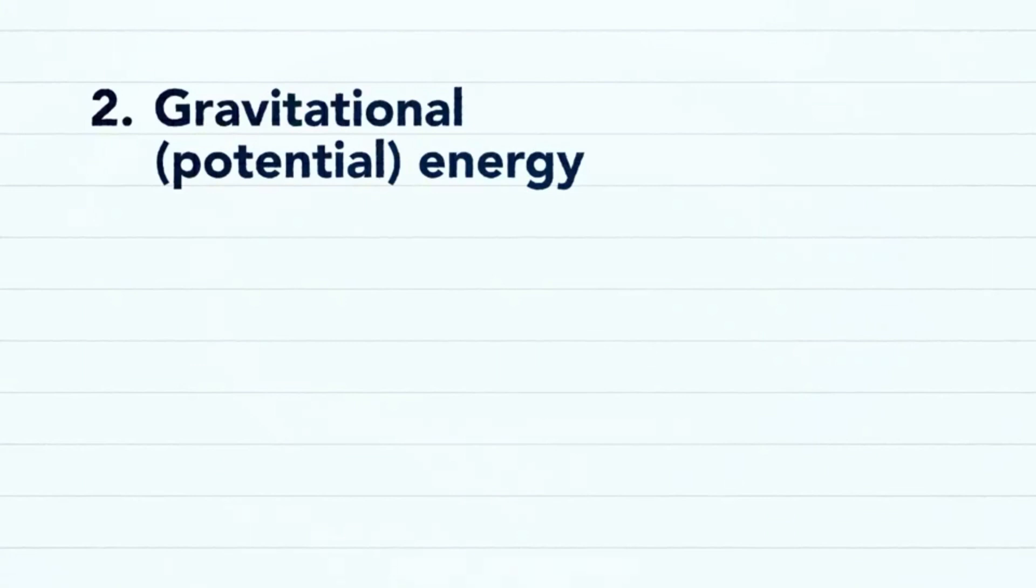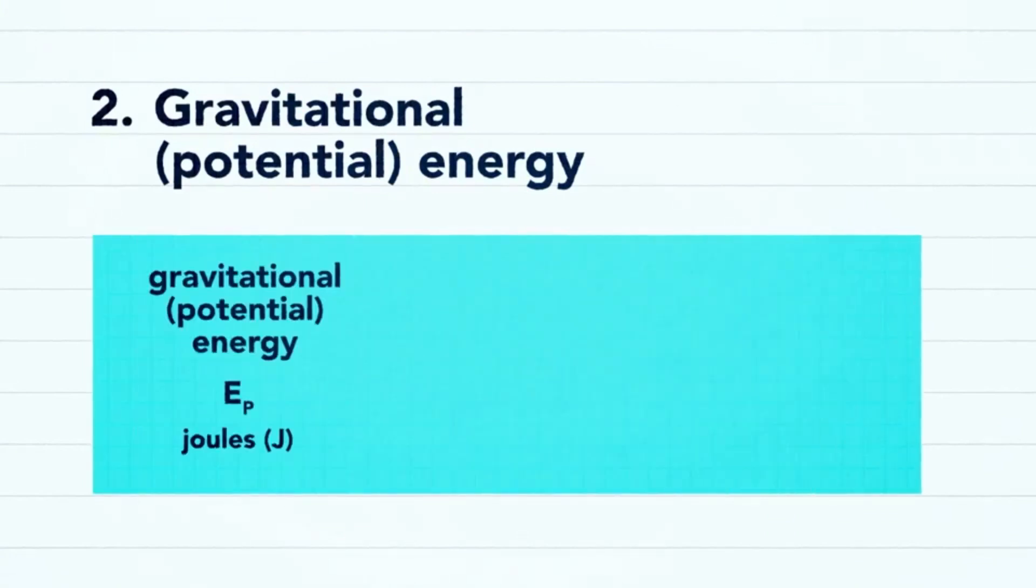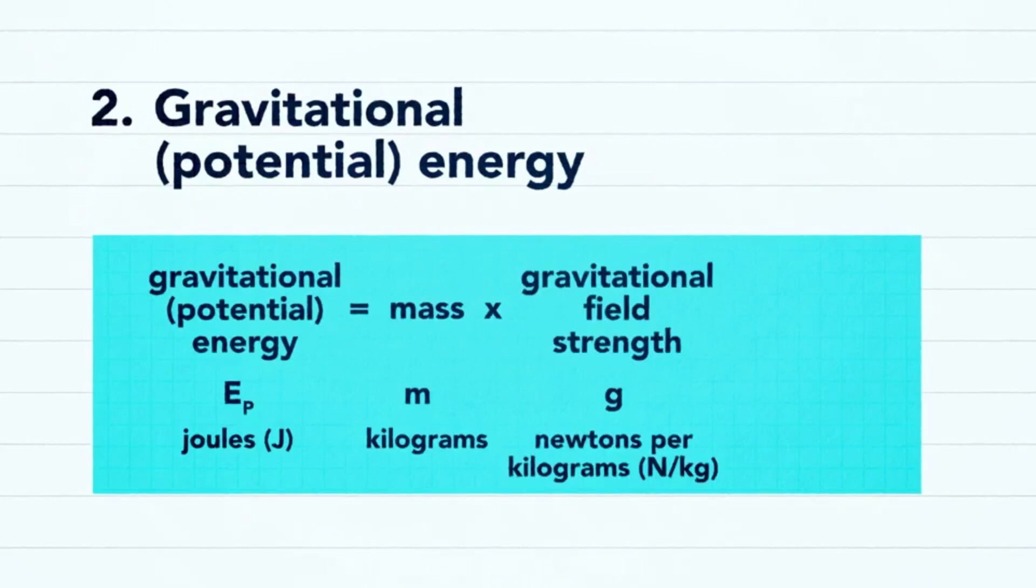The second equation allows us to calculate gravitational potential energy. This is the mass of an object multiplied by the gravitational field strength multiplied by the height of the object from the ground.